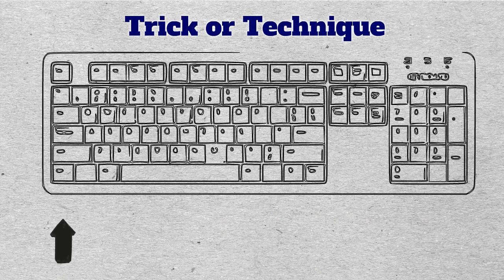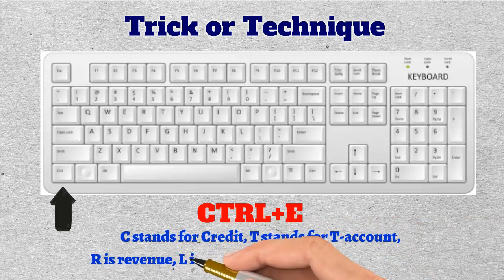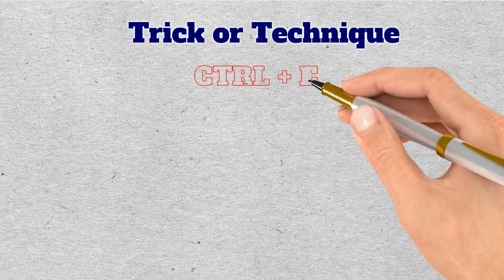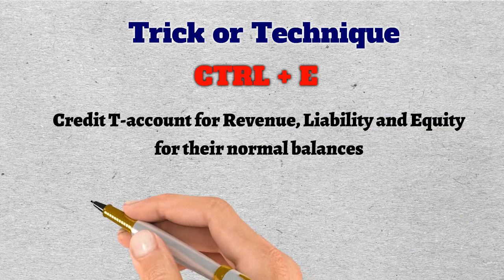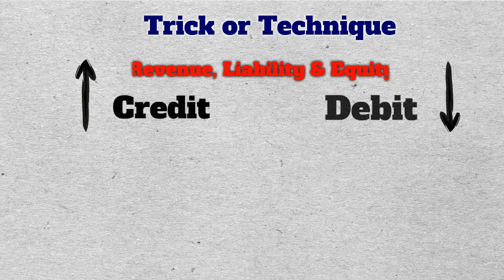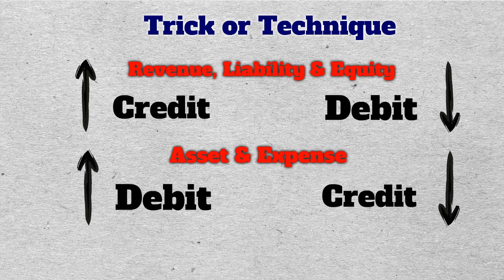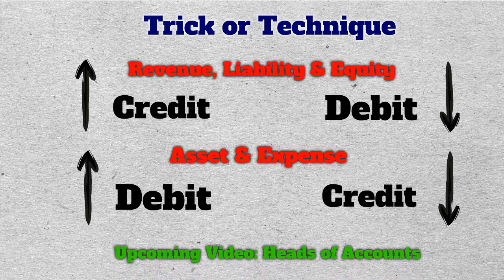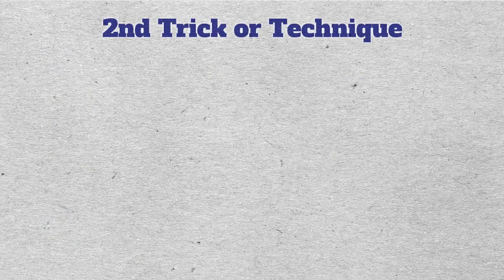Here is a trick to remember the normal balance — the increasing effect — of each account. We all have seen a keyboard, and there is a Control button on every keyboard. The CTRL+E button will help us remember the rules. C stands for Credit, T stands for T account, R is Revenue, L is Liability, and E stands for Equity. So CTRL+E means: Credit T account for Revenue, Liability, and Equity for their normal balances. Normal balance means when these accounts increase. To decrease these accounts you do the opposite. If you remember the rules for Revenue, Liability, and Equity, the reverse treatment applies to the remaining two account heads: Assets and Expenses.